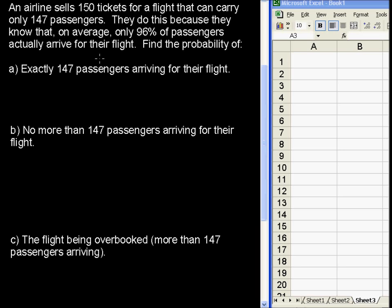An airline sells 150 tickets for a flight that can carry only 147 passengers. They do this because they know that, on average, only 96% of passengers actually arrive for their flight. Find the probability of exactly 147 passengers arriving for their flight.